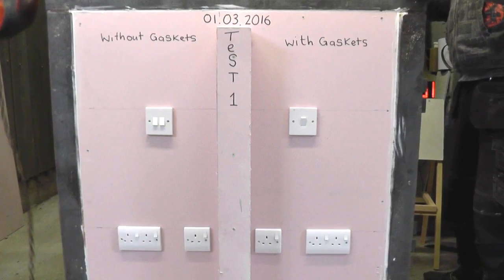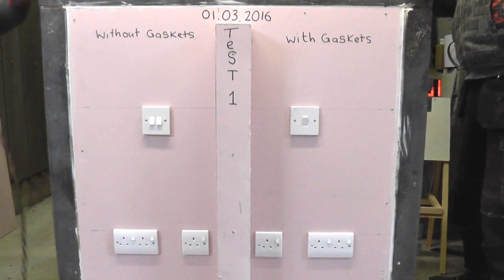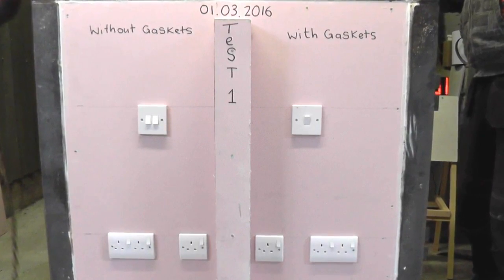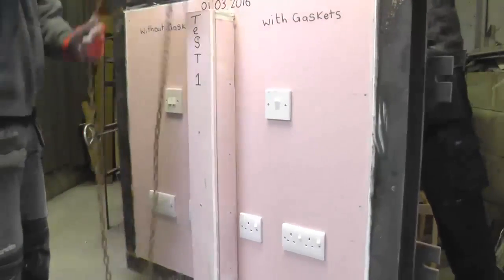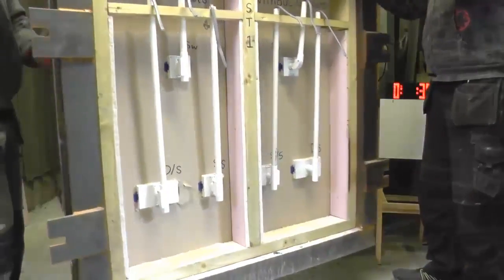The recessed socket boxes on the right are fitted with our intumescent gaskets, meeting the requirements in EN13641. The socket boxes on the left remain unprotected. The following test will show how the gaskets expand, stopping fire penetrating into the rear of the wall.